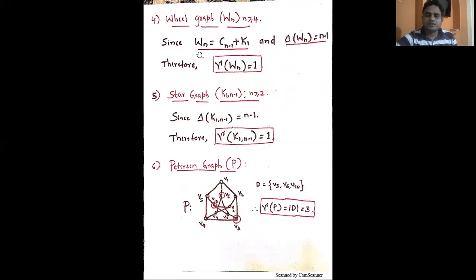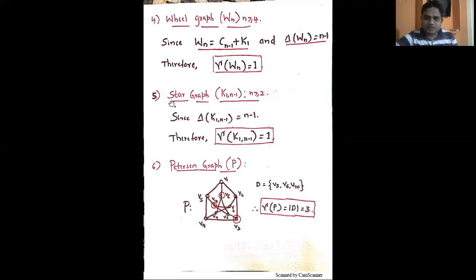For the wheel graph, by definition W_n equals C_{n-1} plus K_1. The maximum degree of W_n is n minus 1, so the domination number of the wheel graph is 1. Similarly, for the star graph the maximum degree is n minus 1, so only one vertex is required to cover the remaining vertices, and the domination number of the star graph is also 1.